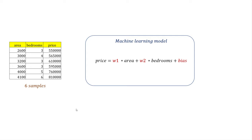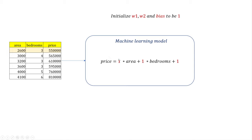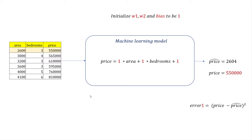My dataset has a total of six examples. During training, I go through the first sample, initialize w1, w2, and bias to one, feed it into the equation, find the predicted price, compare with the actual price, and find the squared error. I then feed the second sample, find error two, and do this for all samples until sample six, then sum errors one through six.